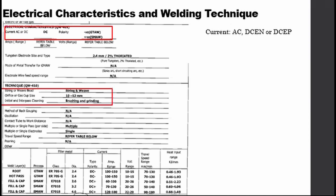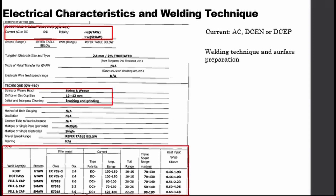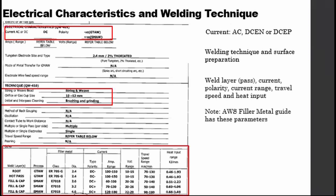Also indicated is the welding technique, such as string or weave, and the necessary surface preparation prior to the start of the weld. The last table shows the electrode designation, current and voltage range, travel speed, polarity, and heat input for the individual weld passes or layers. The AWS filler metal guide prescribes limits especially for the current, voltage ranges, travel speed, and heat input. These parameters, along with the electrode type, determine the penetration of the weld, the length and width of the arc, and the amount of weld deposition in the base metal. The selection depends upon the base metal's mechanical and chemical properties, thickness, and preheat temperature, among others.